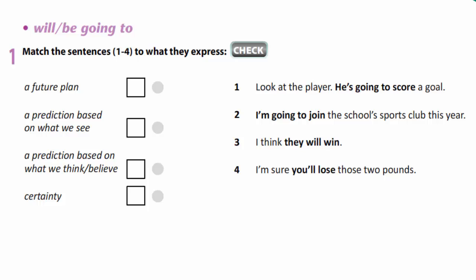In exercise one, we are to match the sentences to what they express. Sentence one: Look at the player — he's going to score a goal. It's a prediction based on what we see. Sentence two: I'm going to join the school's sport club this year. It's a future plan. Sentence three: I think they will win — a prediction based on what we think or believe. And the last: I'm sure you'll lose those two points — certainty.